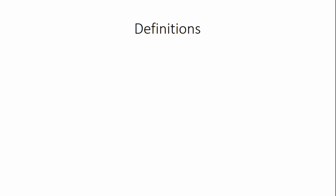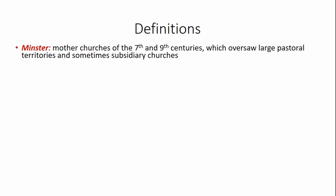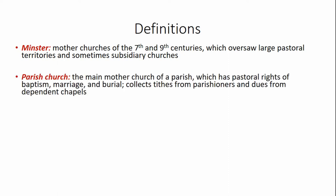I'll start with some definitions because some of these terms might be peculiar to England and to being a church archaeologist. Minsters were mother churches — important churches usually established between the 7th and 9th centuries — and they oversaw large pastoral territories and sometimes subsidiary minor churches. Parish churches are the main mother church of a parish, usually a much smaller territory than that overseen by a minster, and which had pastoral rights of baptism, marriage, and burial.